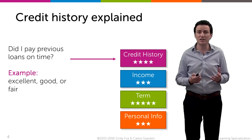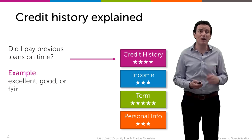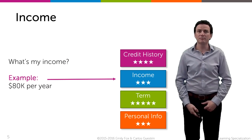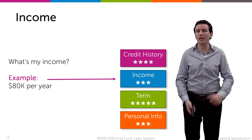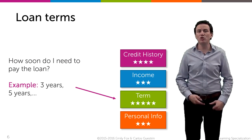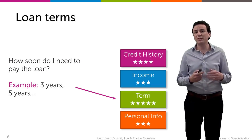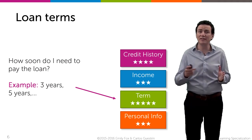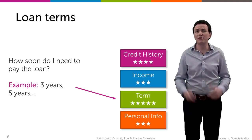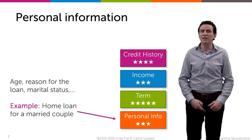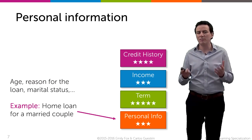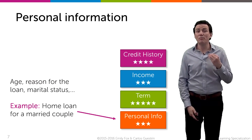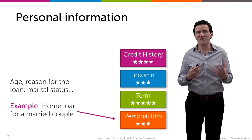Typically you look at credit history, which covers all the other loans I've taken in the past, my credit cards, and whether I've paid those off on time. Then we look at my income — how much money I make today. You might also look at the term of the loan, which maybe it's three years, five years, 15 years, or 30 years — the period of time I'm going to take to pay back that loan. And finally, information about the individual like my age, whether I'm married and so on. Given this information, I want to make a prediction as to whether loaning me money is a risky thing or not.